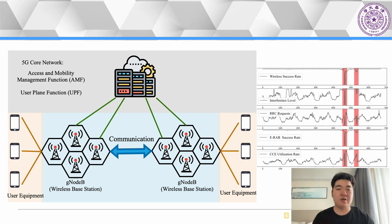After the deployment of anomaly detection methods, operators periodically collect feedback, which holds significant value in improving anomaly detection performance. Feedback data is a treasure trove for improvement. In real-world environments, the frequency of false negative feedback is usually very low, and the newly generated data's distribution can differ significantly from that of the original training data. Therefore, the feedback-based performance improvement of previously proposed methods is limited.